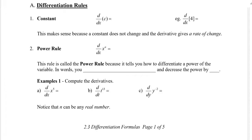So the first rule is the rule with the constant. If you think of the derivative as a slope, and we find the slope of a constant — so let's say I have this little graph here. Because it's just a number, let's say it goes like this and it's a constant value, always going to be 1. If I asked you to find the slope of that line, we know that it's always going to be 0. So the slope or the derivative of any constant number is always going to be 0. So if I asked you what's the derivative of 4, you would say the derivative of 4 is 0. This makes sense because a constant does not change and the derivative gives a rate of change.